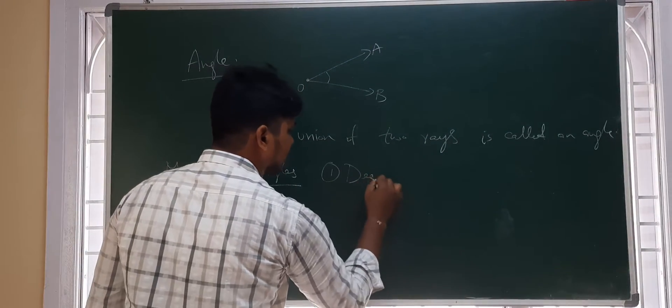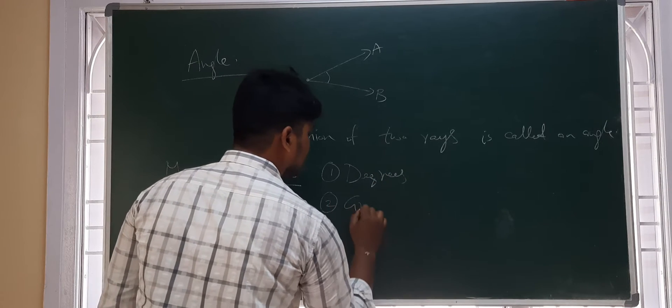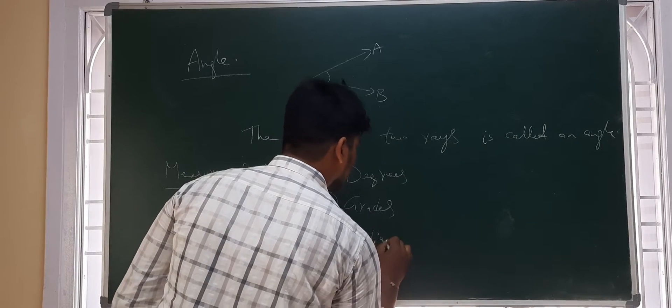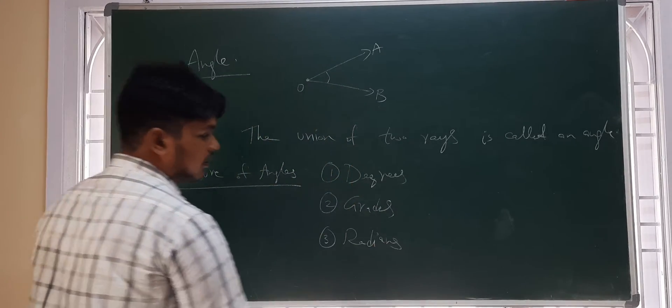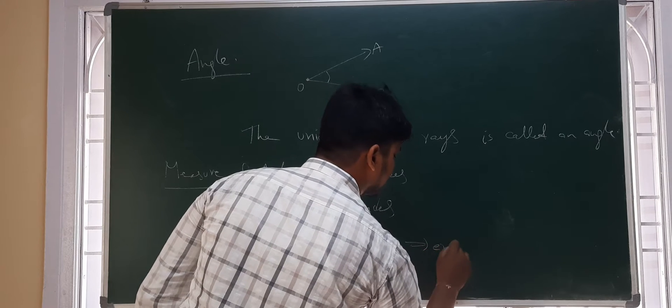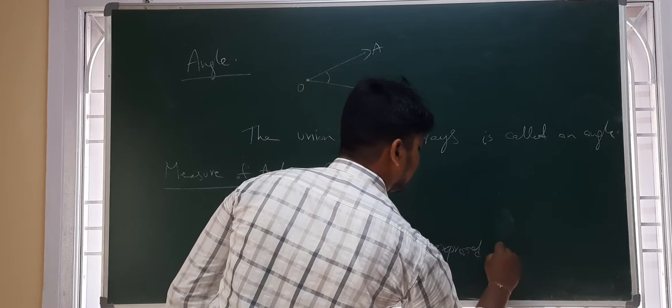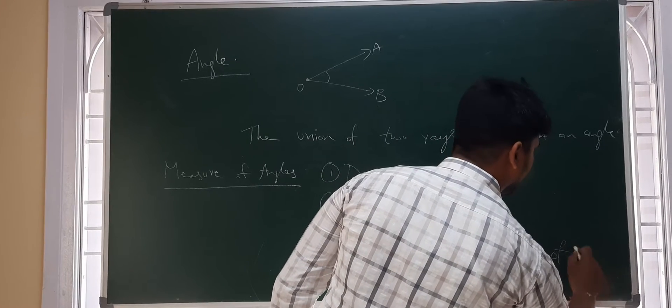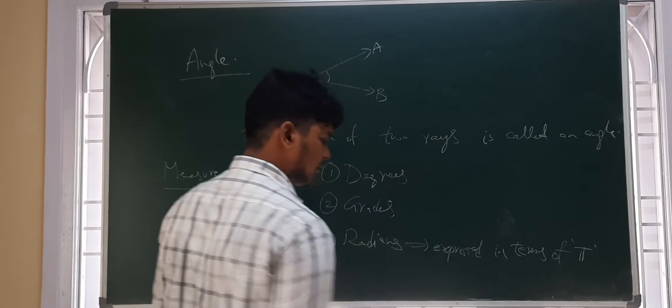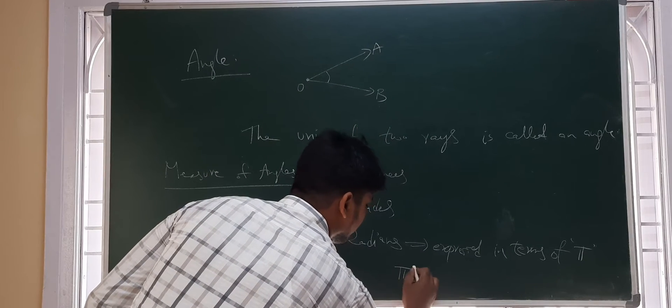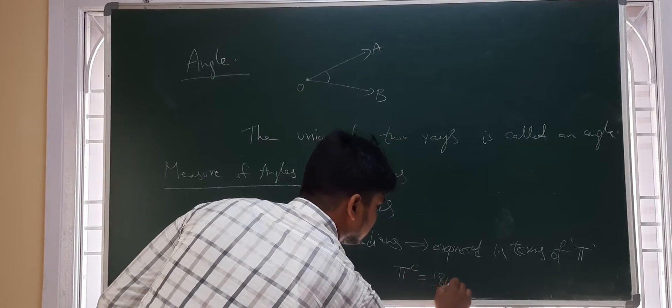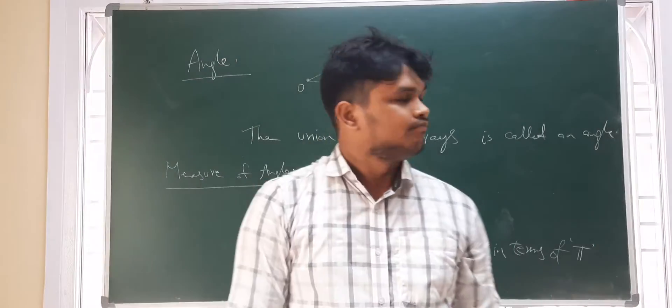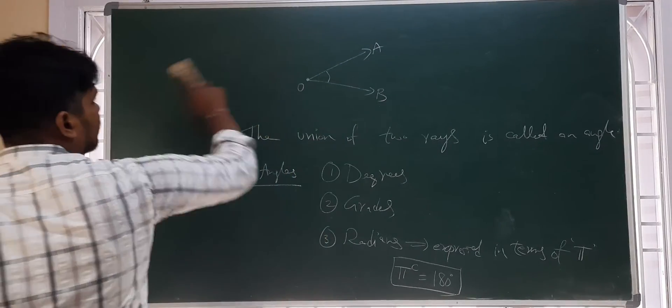Firstly, degrees, grades, radians. Radians is always expressed in terms of pi. Generally, pi radians is equal to 180 degrees. Now, moving on to the next part of trigonometry.